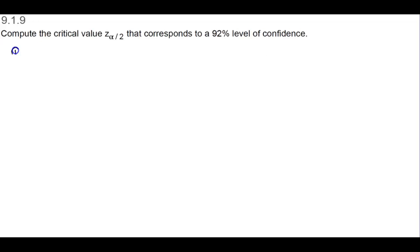The first thing we want to do is figure out alpha. We have alpha divided by 2, so we're looking for alpha. To find alpha, we take 100% and subtract 92%, which gives us 8%. If we write that as a decimal, that is 0.08.